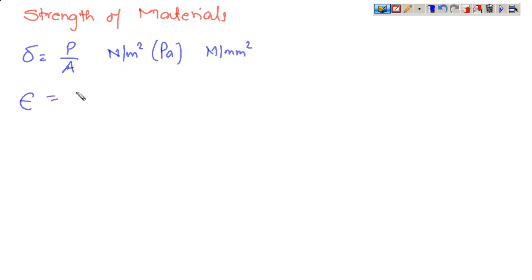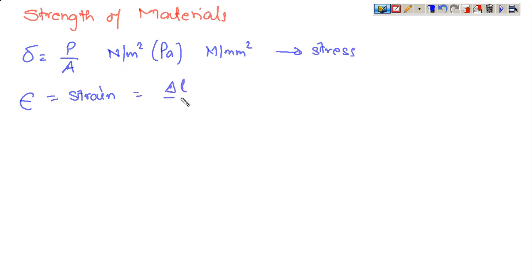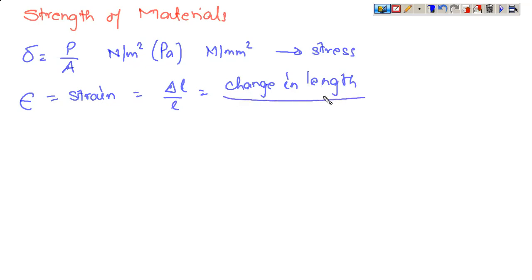Strain is denoted by epsilon. Strain is given by delta L by L, or it is the change in length by original length.